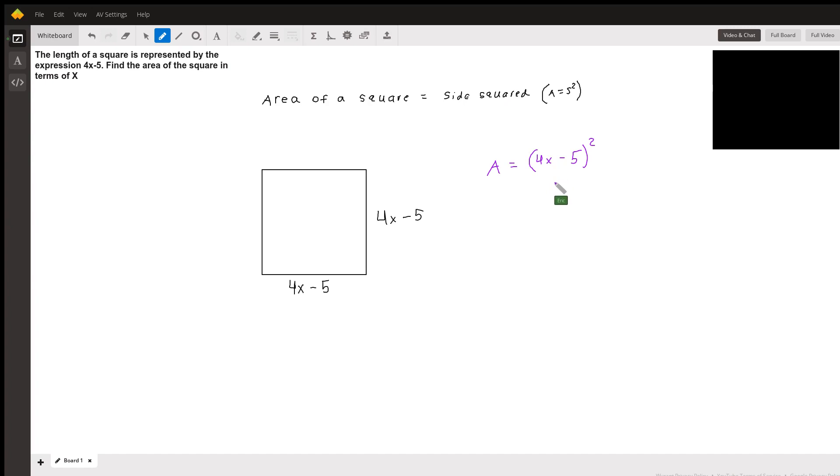Remember that (4x-5) squared means the same thing as (4x-5) times (4x-5). So we really just have two binomials multiplying together.